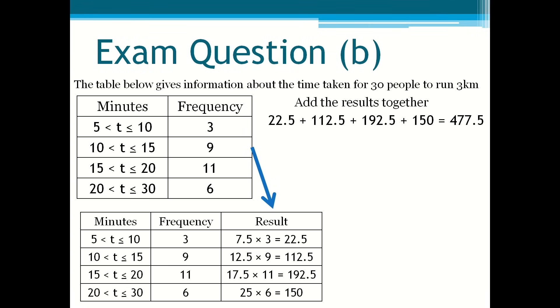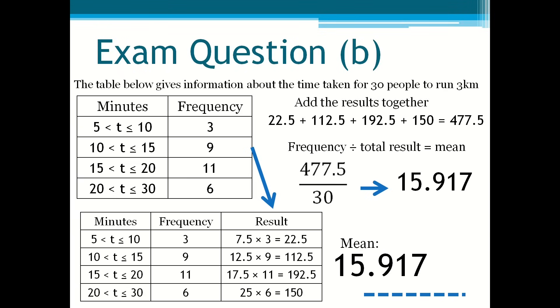And remember that frequency divided by total result is equal to the mean. So 477.5 divided by 30 is equal to 15.917. So the mean time taken to run 3 kilometers is 15.917 minutes.